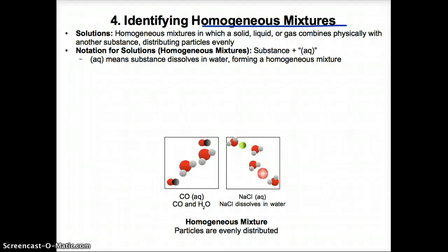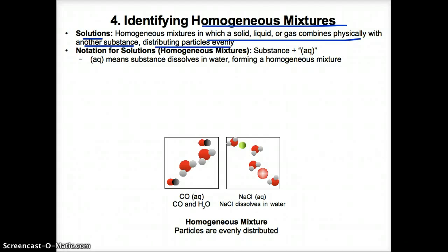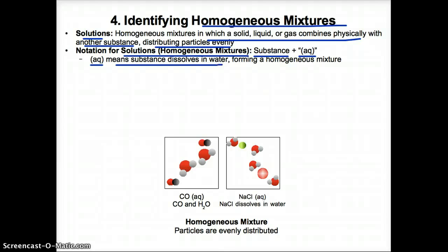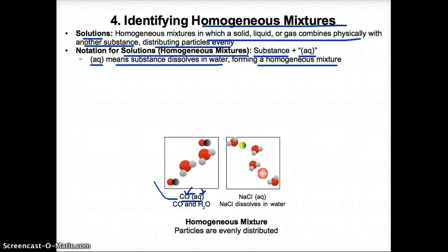Solutions are homogeneous mixtures where a solid, liquid, or gas combines physically with another substance, usually water, distributing particles evenly and therefore usually giving what looks like a uniform appearance even though it's a mixture. The notation for solutions is a symbol for the substance — typically an element or a compound — followed by (aq) in parentheses, meaning the substance dissolves in water to form a homogeneous mixture. For example, CO(aq) means the compound carbon monoxide dissolves in water to form a solution. NaCl(aq) means the ionic compound sodium chloride dissolves completely in water to form a homogeneous mixture — specifically a solution of sodium chloride.